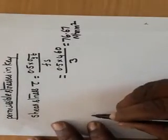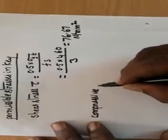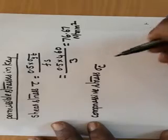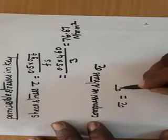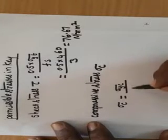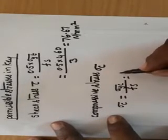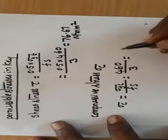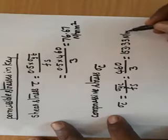Now, we find compressive stress. Compressive stress, that is σC. σC equal to σYC by Fs. Here, σYC and σYT both are same. Then, I can write 460 by 3, it is equal to 153.33 Newton per mm square.